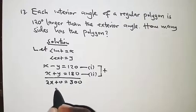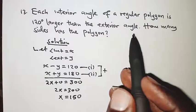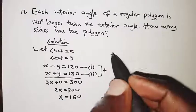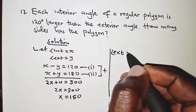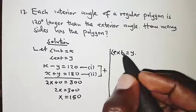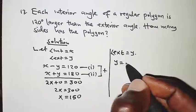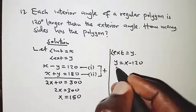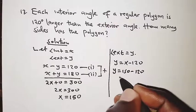So 2x equals 300, and therefore x equals 150 degrees. Since x is the interior angle, we now need the exterior angle y. Using the first equation, y equals x minus 120, which is 150 minus 120.